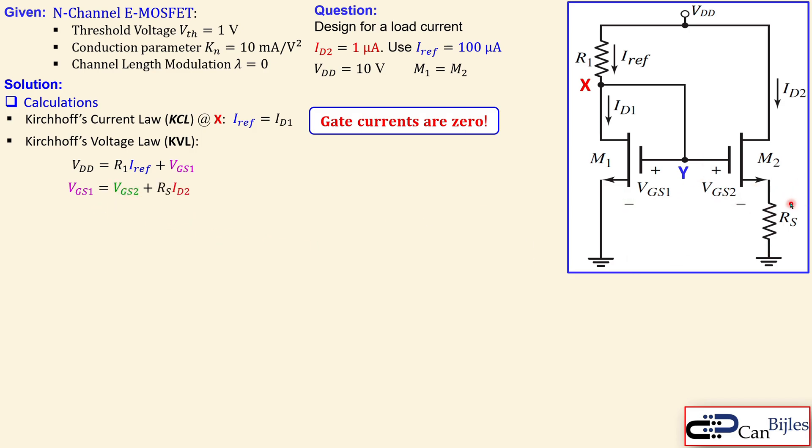As said before, now one thing we need to note here: ID2 is equal to actually also this current, which is IS2, which is not depicted here, but that's exactly the same because the gate current is zero.